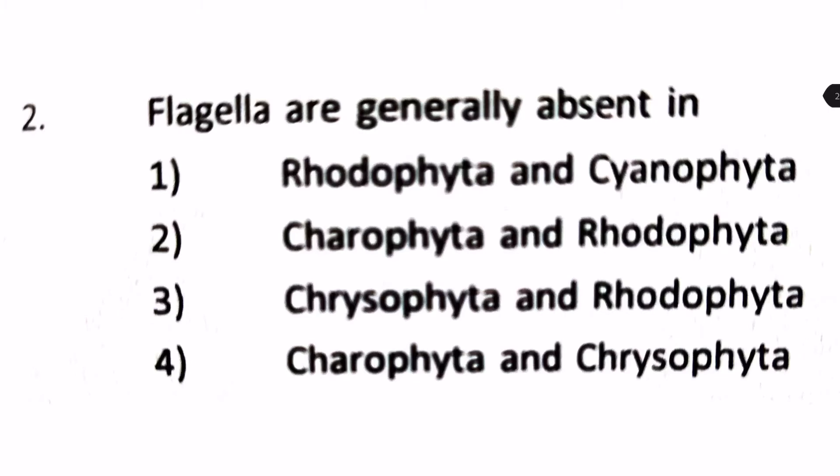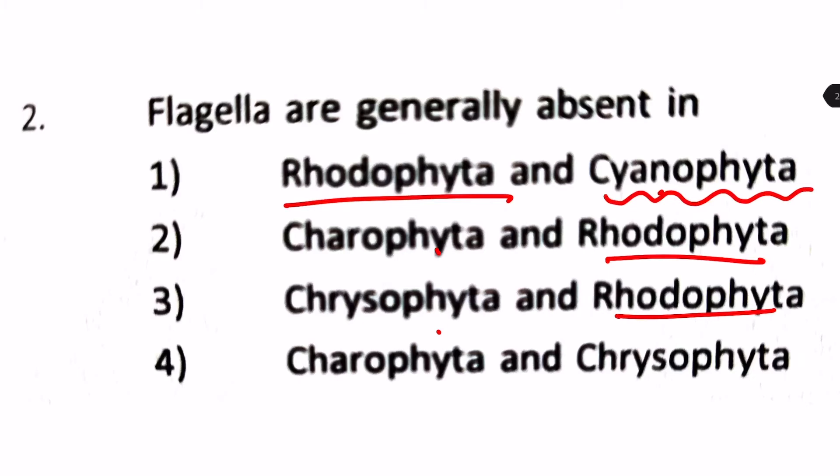Flagella are generally absent in which groups? Options include Rhodophyta and Cyanophyta, Charophyta and Rhodophyta, Chrysophyta and Rhodophyta, or Charophyta and Chrysophyta. Rhodophyta is repeated in many options — Rhodophyta does not have the flagella stage, as flagella is a primitive character and Rhodophyta is the most advanced algae. Cyanophyta, the blue-green algae, also does not have any flagella stage. So the answer is number 1.